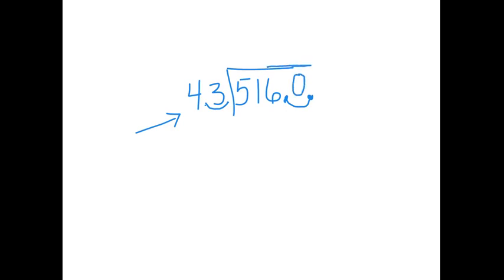We need to fill in our zero. Move the decimal point straight up into your quotient. And now we're doing 5,160 divided by 43. Okay, 43 can go into 51 one time.